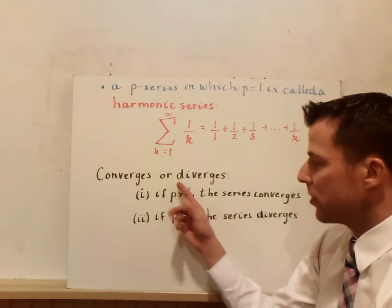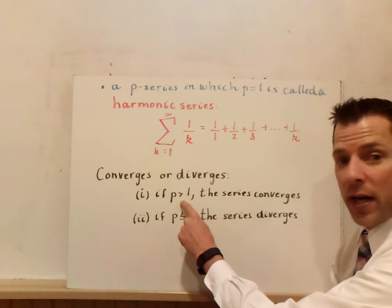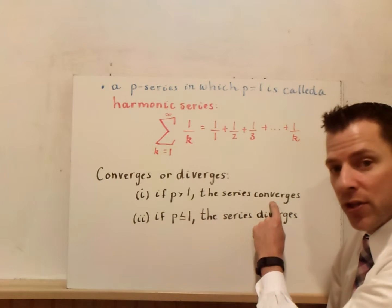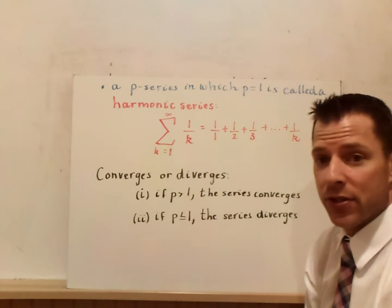Now, for converging or diverging, here's what we need for the test. Pretty simple: if p is greater than 1, the series converges. If p is less than or equal to 1, the series diverges.